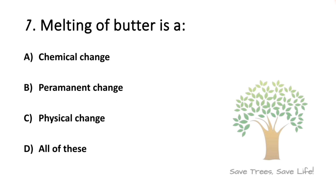Question number 7. Melting of butter is a — Option A: Chemical change. Option B: Permanent change. Option C: Physical change. Option D: All of these. So the answer is option C, Physical change.